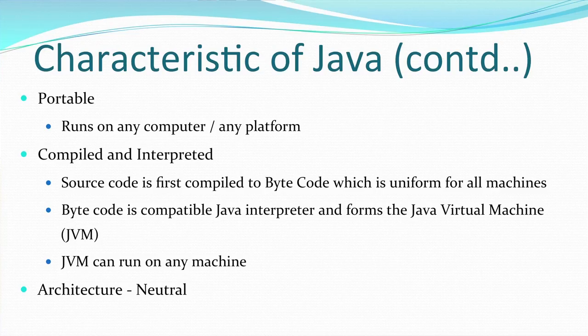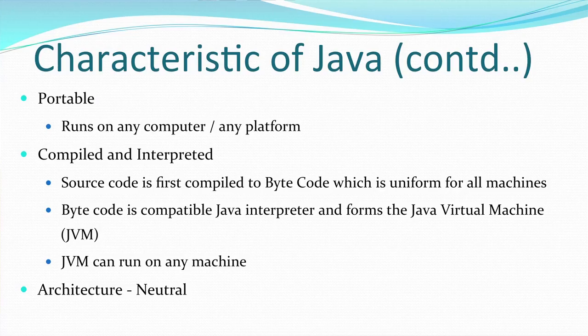Java is portable — the program can be moved from any machine to any machine and can run on any platform. Java is both a compiled and interpreted language. When you write Java source code, it is compiled to form byte code. This byte code, along with the interpreter, forms the Java Virtual Machine (JVM), which can run on any platform. So it is compiled up to byte code and then interpreted to form a Java Virtual Machine.